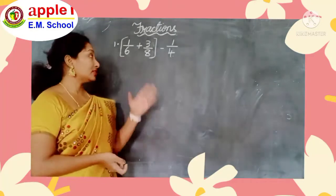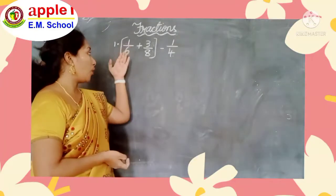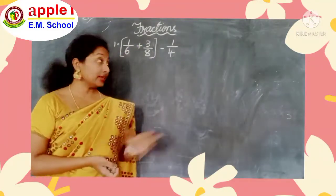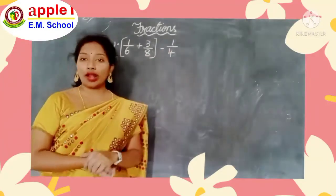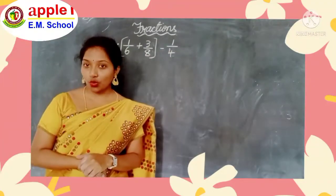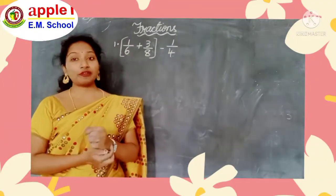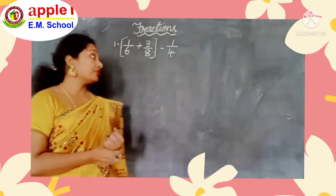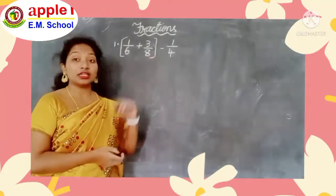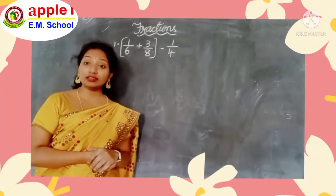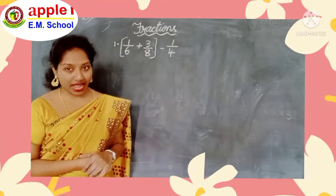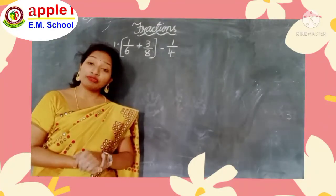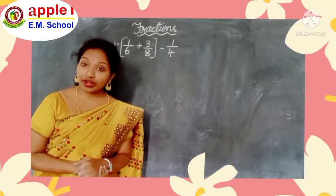Ok children, see here: 1 by 6 plus 3 by 8 minus 1 by 4. We have to simplify this. If you observe here, these are unlike fractions. So how do we simplify unlike fractions?